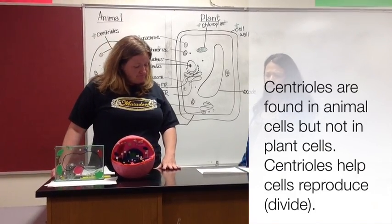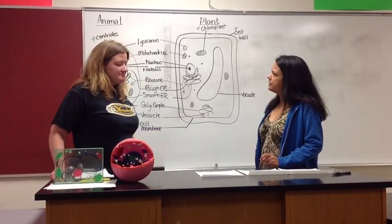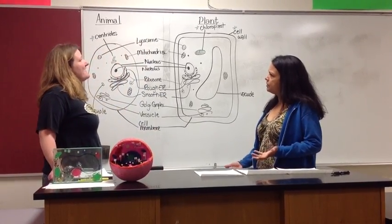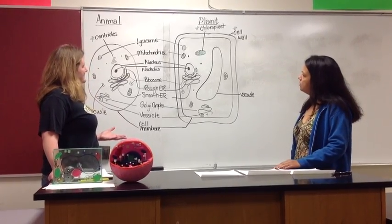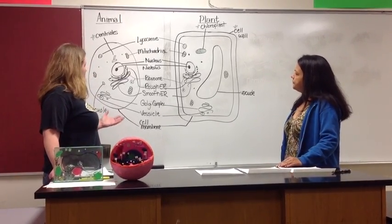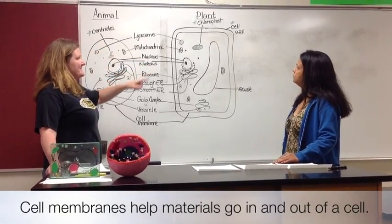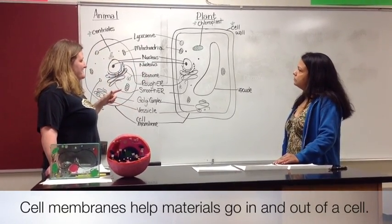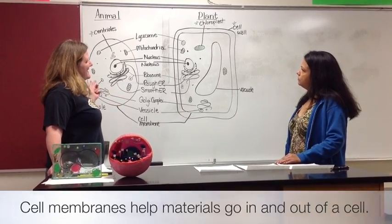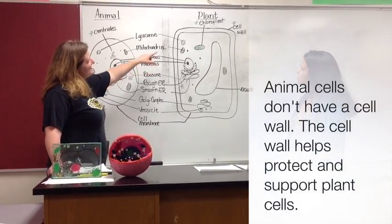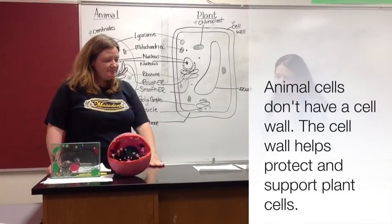The last two items are the cell membrane and the cell wall. Both the animal cell and the plant cell have a cell membrane, which helps stuff go in and out of the cell. However, animal cells don't have a cell wall. The cell wall helps protect the plant cell — just like in prokaryotes.